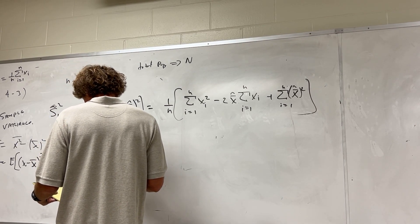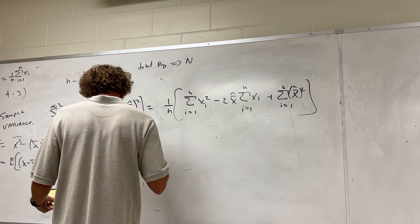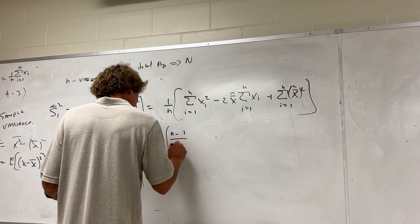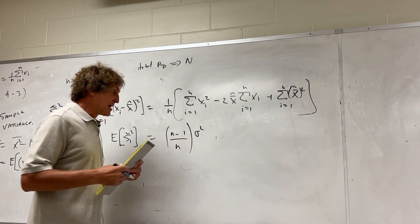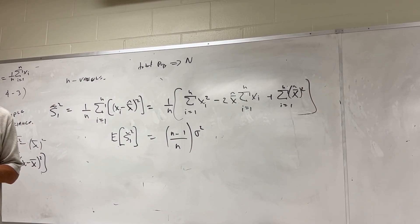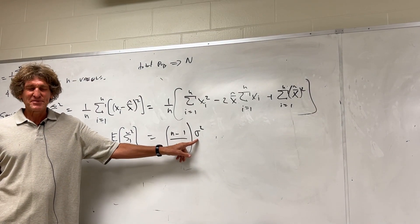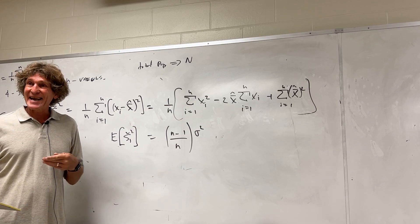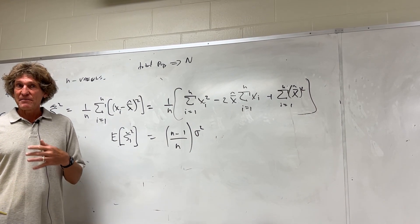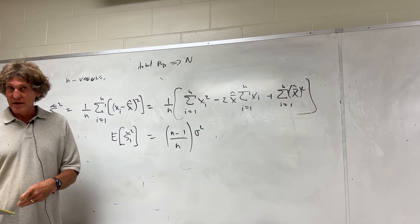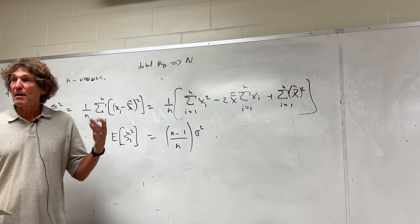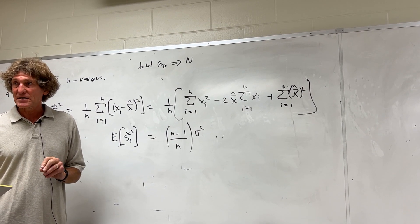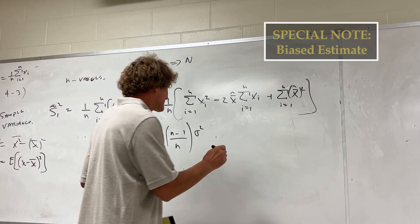After all the manipulation, you get the expected value of s₁-tilde-squared equals (n-1)/n · σ². The book says it's a tedious proof - that's probably an understatement. σ² here is the true variance of the population, and n is the sample size. As n gets large, the expected value of the sample variance approaches the population variance. But this is a biased estimate.